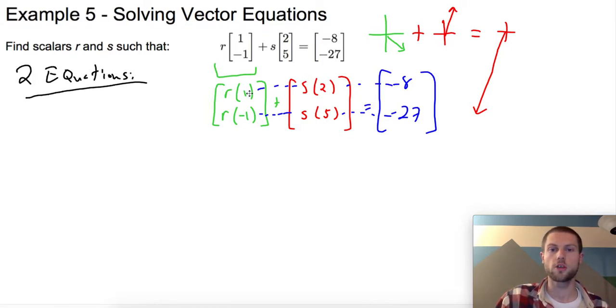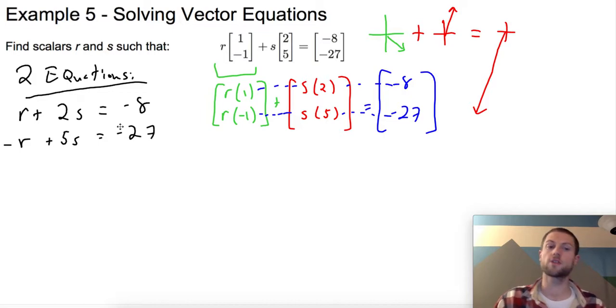I have one equation with my horizontal pieces. r plus 2s equals -8. And I have another equation down here. -r plus 5s equals -27. If this is looking like a system of equations, you're onto something.